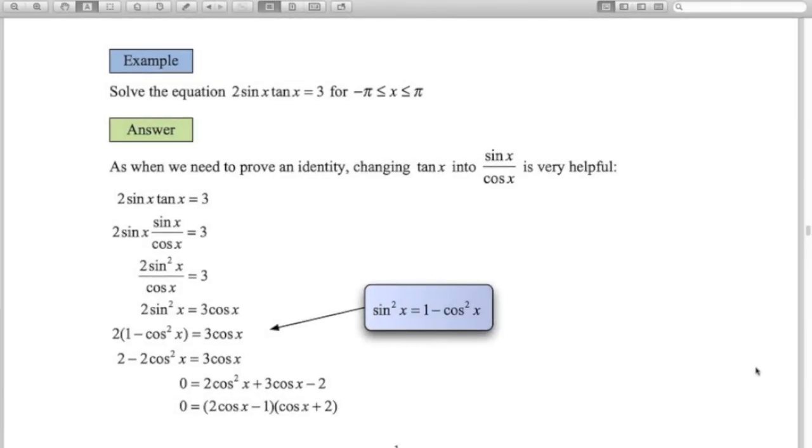So here's our last one. 2 sine x tan x equals 3. So the answer is in radians between minus pi and pi. Just like when we're proving identities, if you see a tan x, replace it with sine x over cos x is a good way to go here, particularly since we've already got some sine x terms in here.